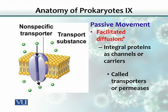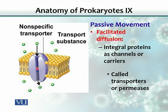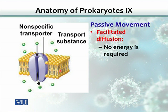The other kind of passive movement is facilitated diffusion. This involves a carrier or transporter, which is usually a protein. The cell membrane is a lipid bilayer, and lipids do not allow charged molecules to pass through. So to facilitate movement of such molecules, an integral protein forms a channel called a transporter or permease, allowing the molecule to cross the membrane. No energy is required, so it is still passive movement, although facilitated.